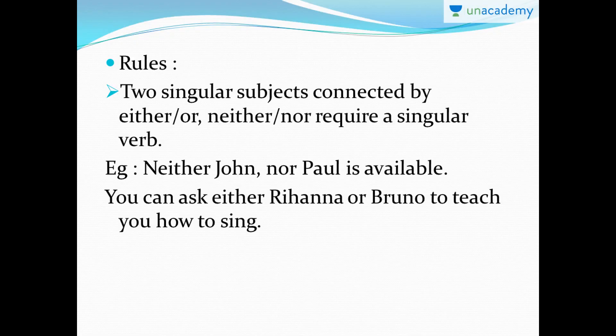So here are the rules. The following slides contain the rules with examples, so please pay attention. The first one is: two singular subjects connected by the words 'either/or' or 'neither/nor' require a singular verb. So there are two singular subjects connected by words like 'either/or' or 'neither/nor,' and you will automatically take a singular verb, even though there are two subjects.